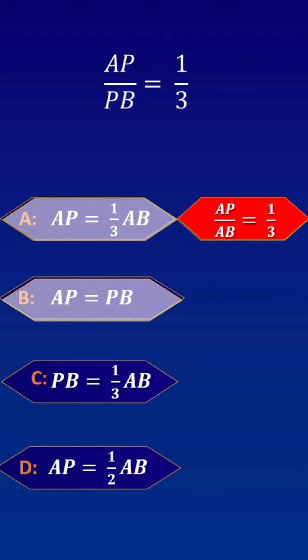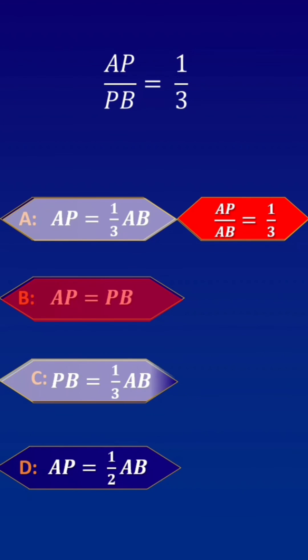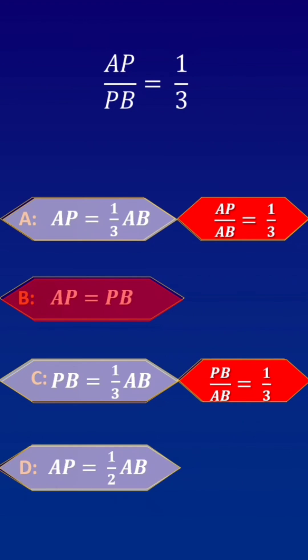According to option B, AP is equal to PB, which is wrong. According to C, PB upon AB is equal to 1 upon 3. That is wrong.